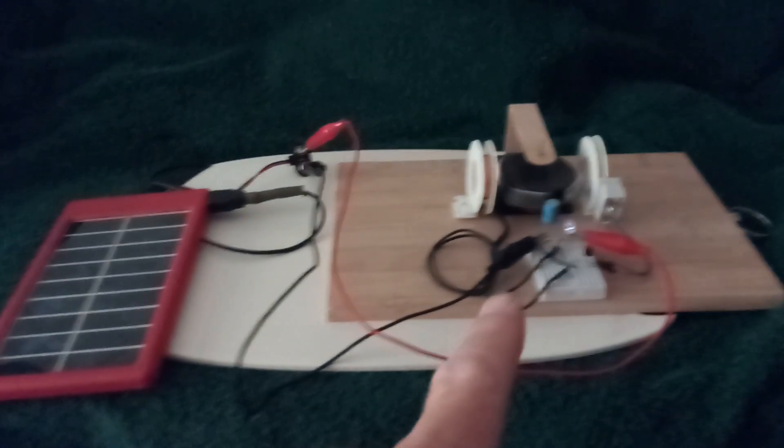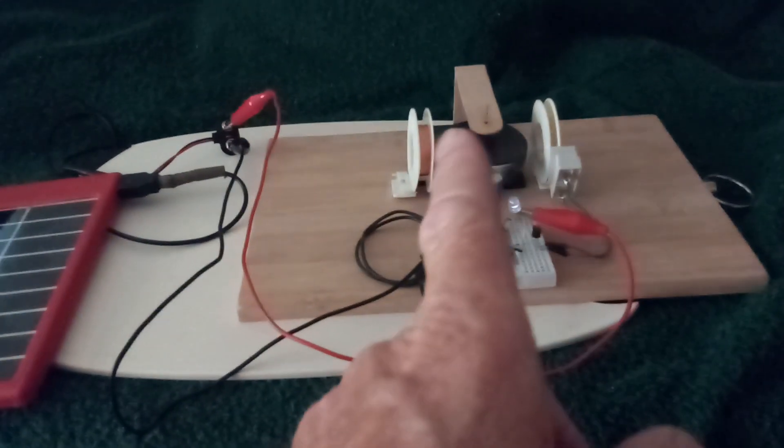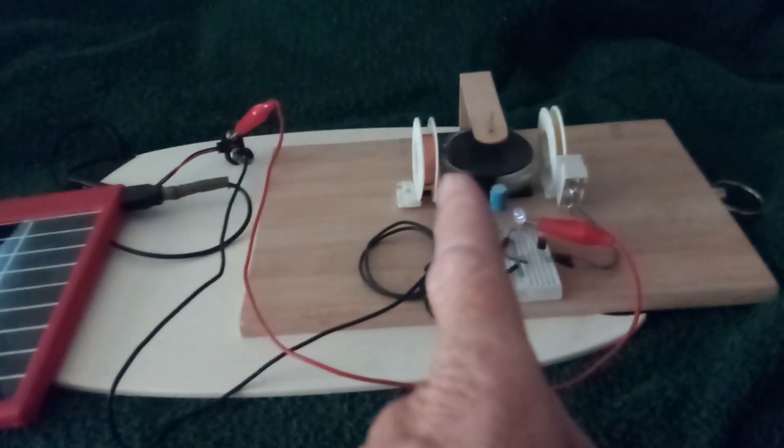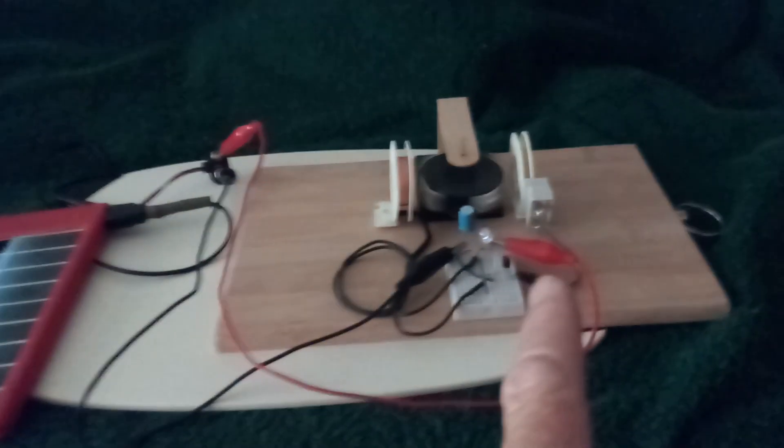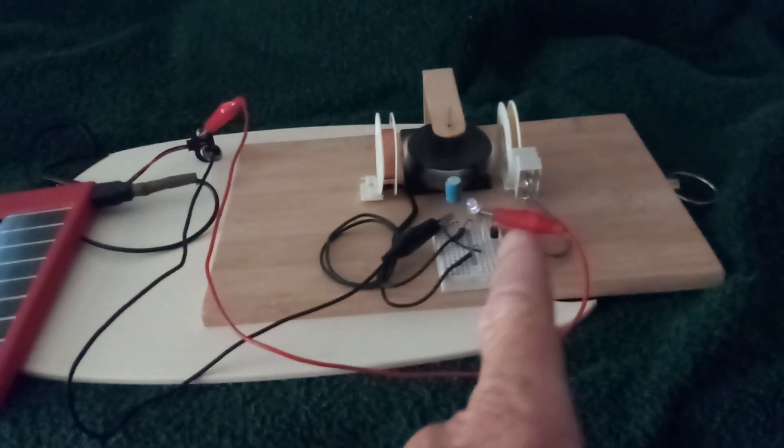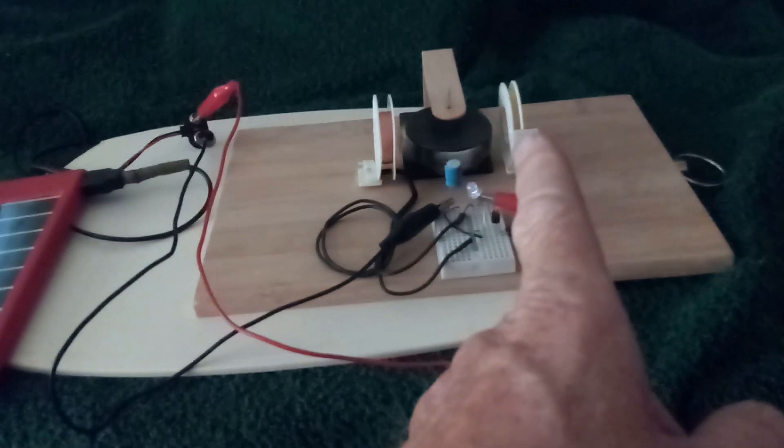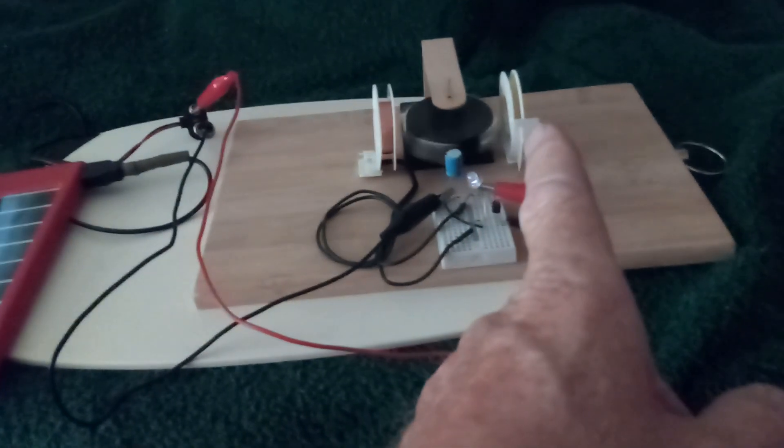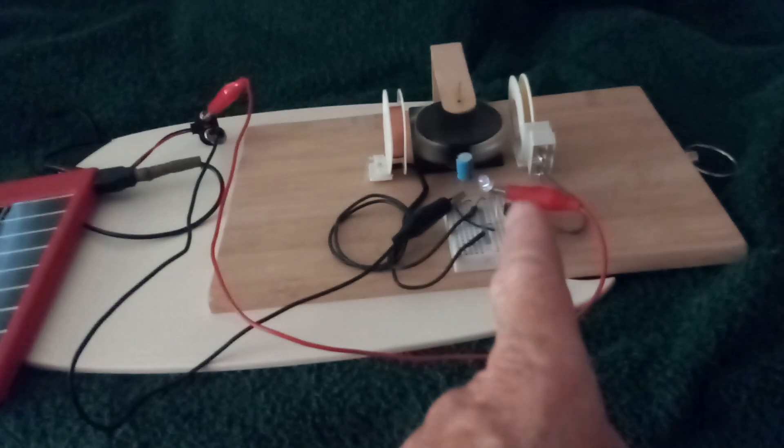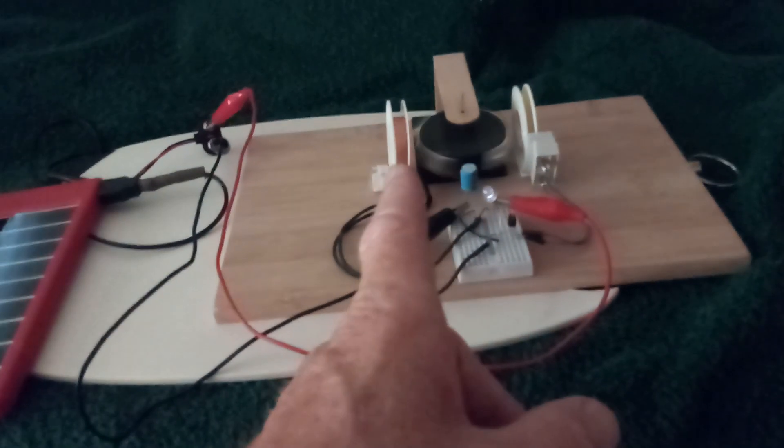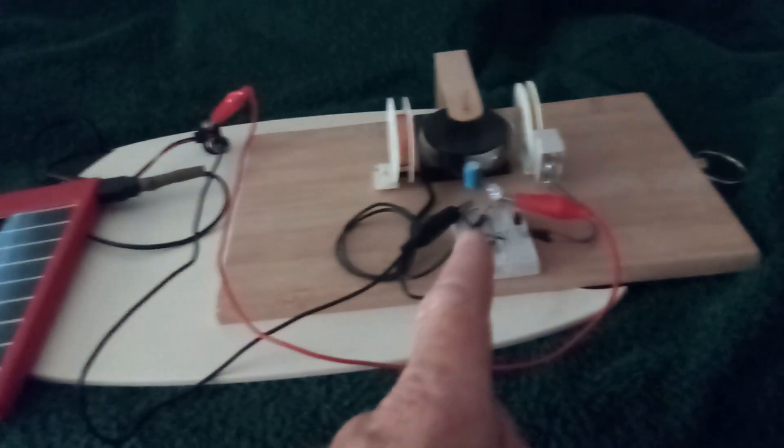Now this is a really simple design. It's just two microwave oven turntable motor coils, and you can get them online really cheap. It's one NPN transistor. One of the coils is activated by a magnet going by and turns on the transistor. It just goes from the ground to the base, and then the other coil, which is the collector to the positive rail.